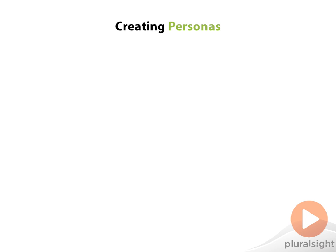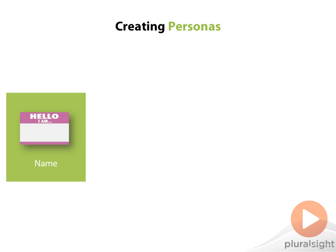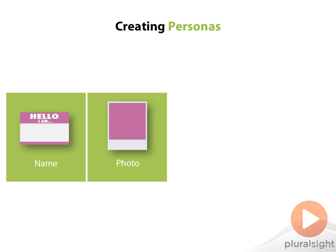Now that we have a feel for what personas are, let's look at the steps for creating one. One of the advantages of personas is that they're very lightweight. At a minimum, every persona really only needs to have a name — a simple first name that makes it easier for the team to refer to the persona in conversation — and a photo. We include photos because while at the beginning the team may not always remember the names, they will always recognize photos, as humans are wired to be very visual animals.